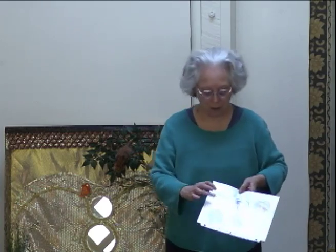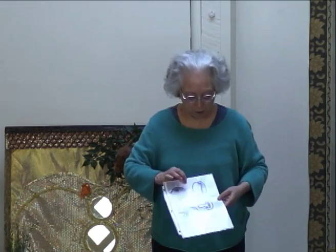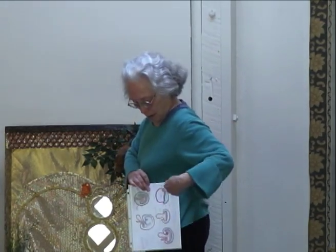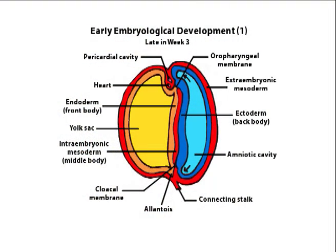We're looking at this picture, except you would hold it this way. Endoderm, yolk sac, ectoderm — in this case it's blue — and amniotic cavity. Here you can see the yellow yolk sac and the blue amniotic cavity.